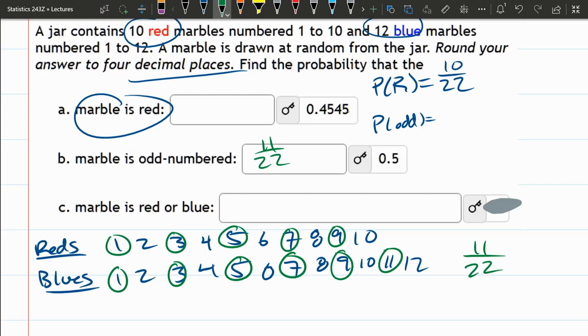Part C, red or blue. Well, we only have red and blue in the jar, so logically, all we have is red or blue. So if you draw red or blue, you're okay, 100% chance or probability of 1.